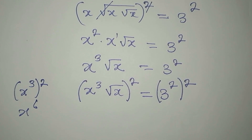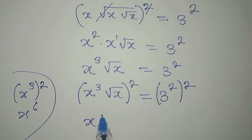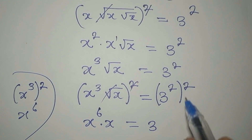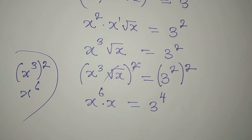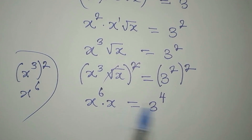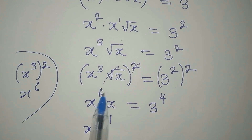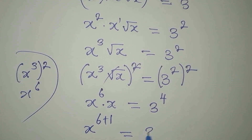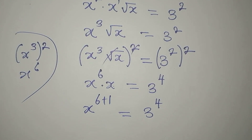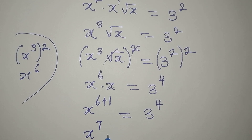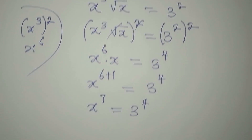So now we have x to the power of 6 multiplied by x, and on the other hand we have 3 to the power of 4, since we multiplied the powers. Using the law of indices again, we pick x and add the powers: 6 plus 1, because this x has an invisible power of 1. Adding gives us x to the power of 7, equal to 3 to the power of 4.